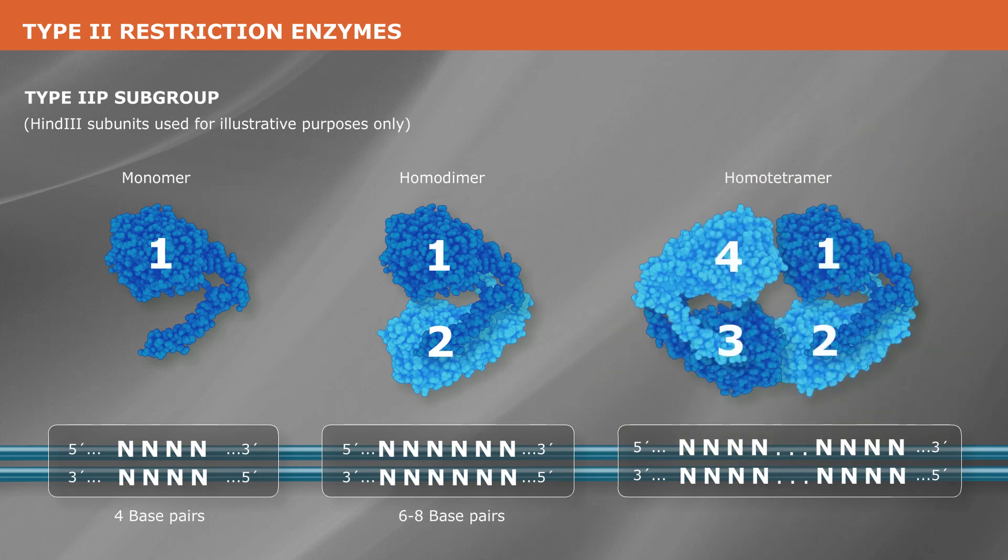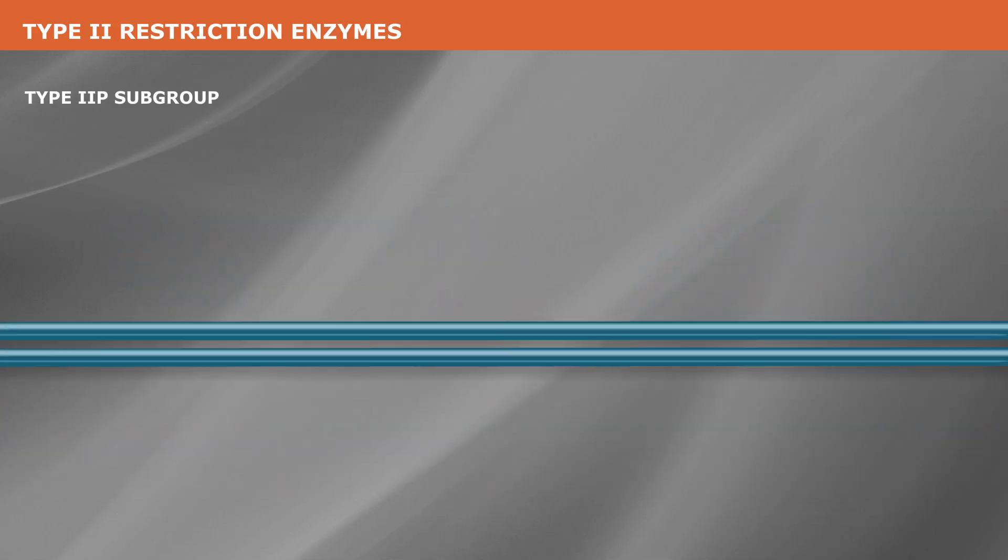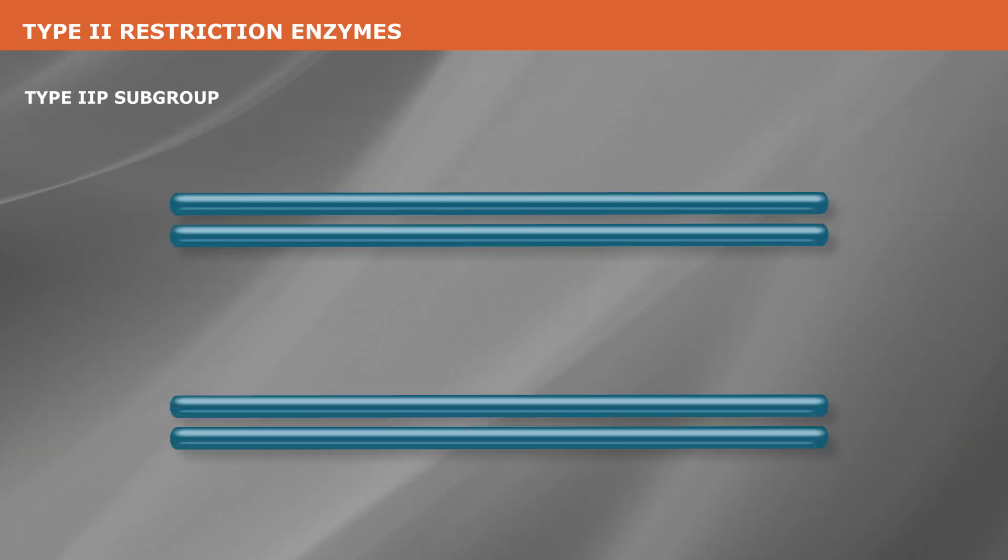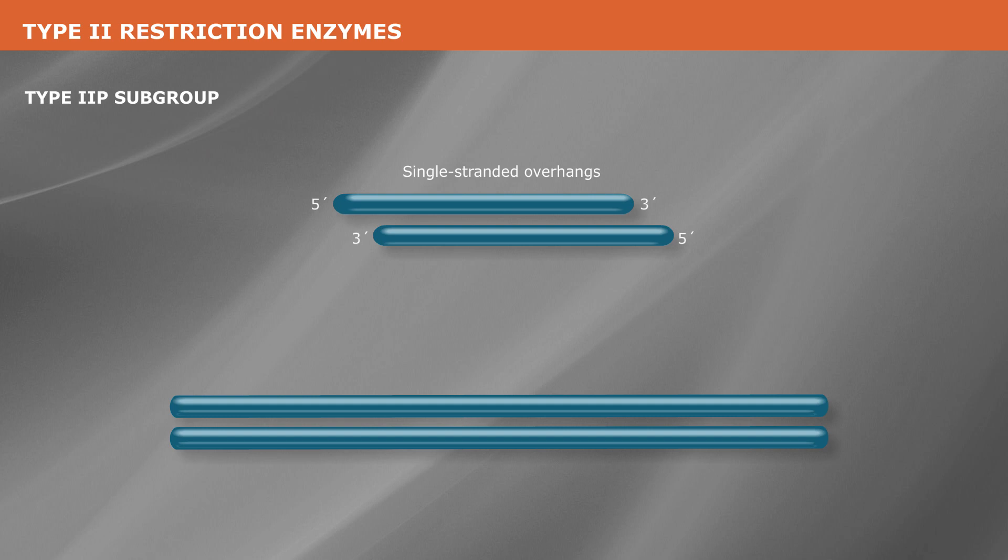These latter bind to and cleave two or more recognition sequences at once. Upon cleavage, some type 2P enzymes leave single-stranded overhangs, while others leave blunt ends.